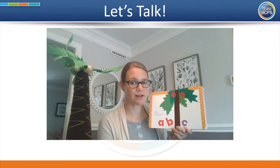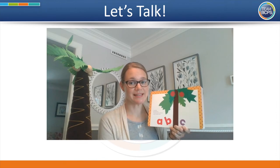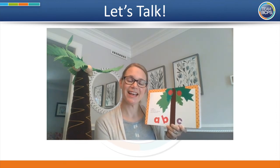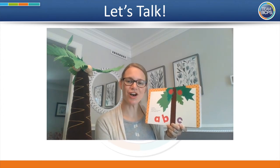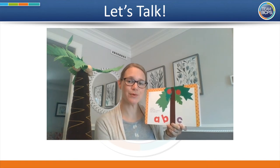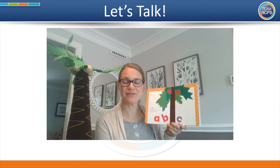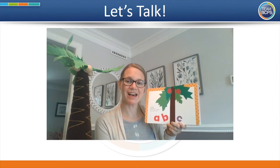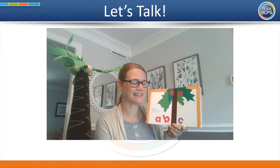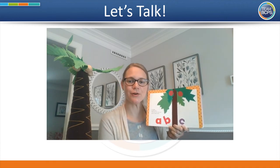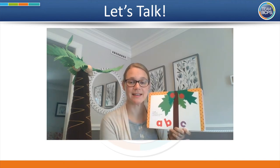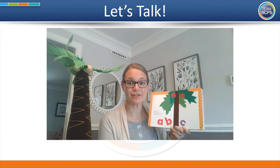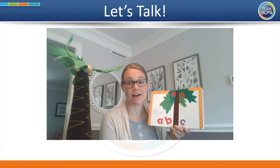Can you sing the alphabet song with me? A, B, C, D, E, F, G, H, I, J, K, L, M, N, O, P, Q, R, S, T, U, V, W, X, Y, and Z. Now I never will forget how to say the alphabet. Did you notice as we sang the song, we sang these first three letters A, B, C in a certain sequence? When we sequence the letters in order, that means we're saying the letters in alphabetical order.